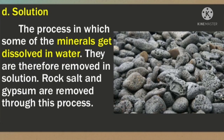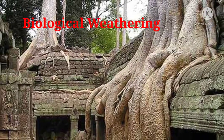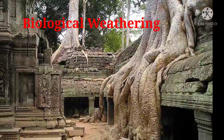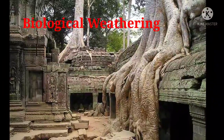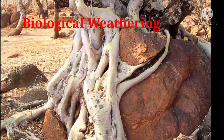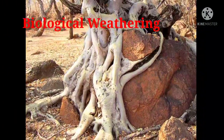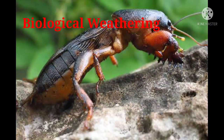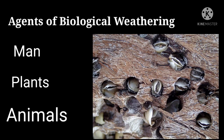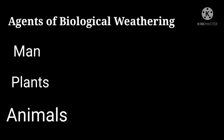Now we'll proceed to the last type of weathering — biological weathering. Weathering caused by any organism is termed biological weathering, also called organic weathering. Various types of biological weathering are related to mechanical/physical as well as chemical weathering. The agents of biological weathering are man, plants, and animals — all of these biological agents decompose and disintegrate rocks into fragments.